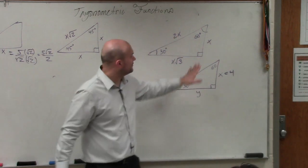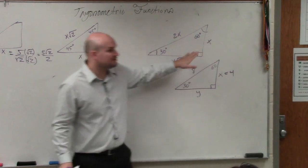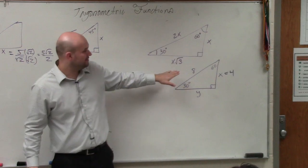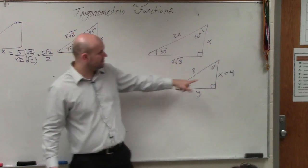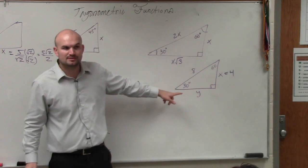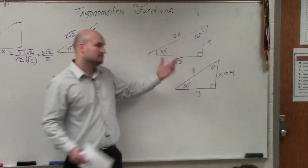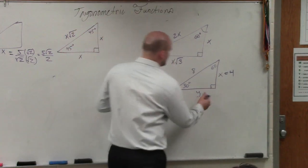Then, to go from the short leg to the long leg, you just multiply by the square root of 3. So 4 times the square root of 3 is 4 square root of 3.